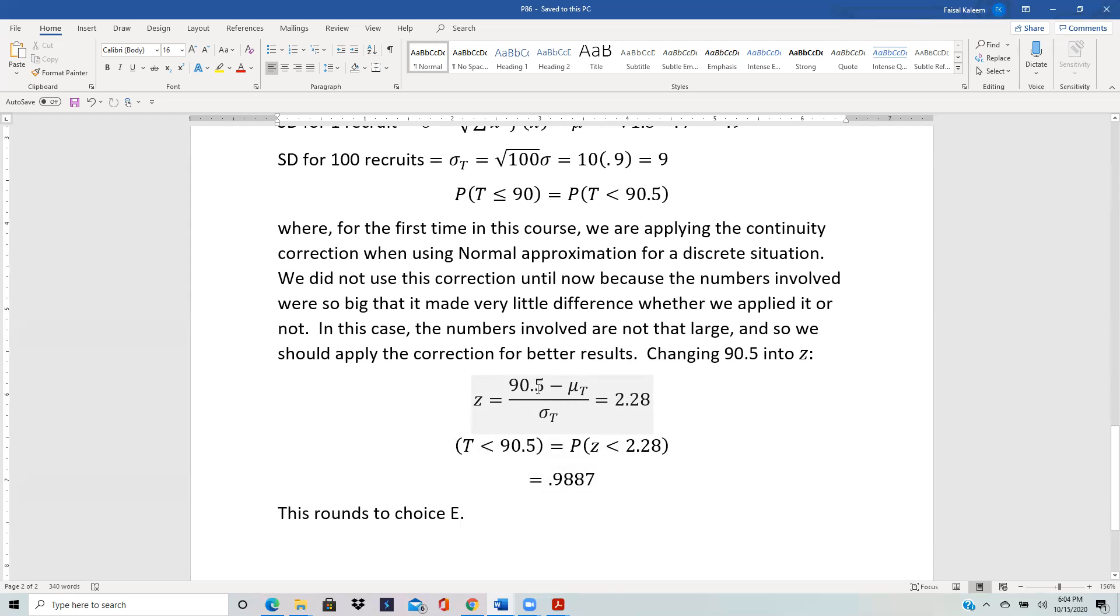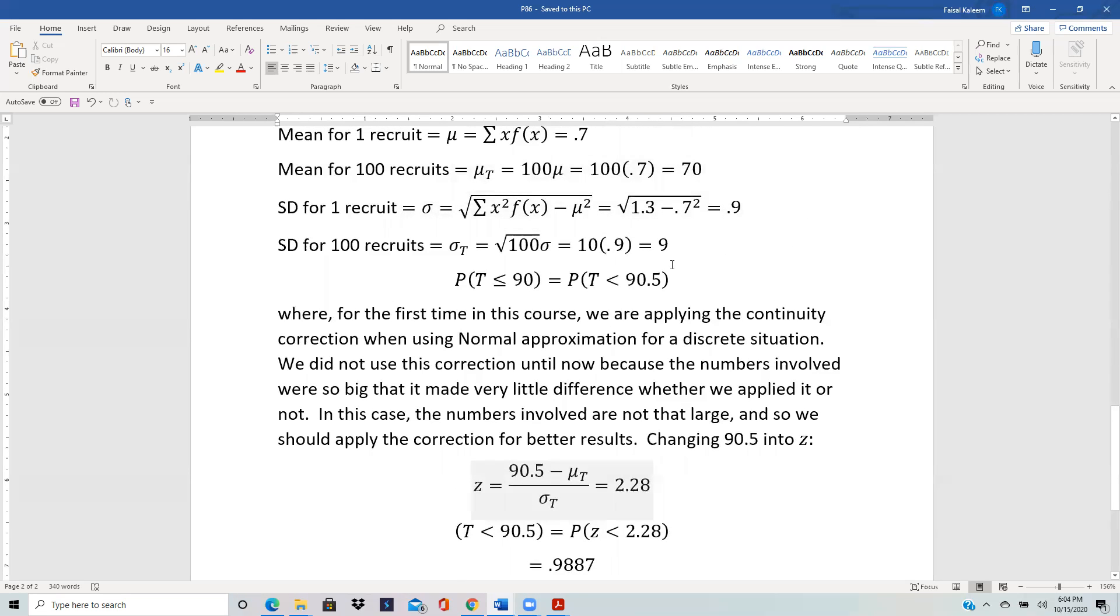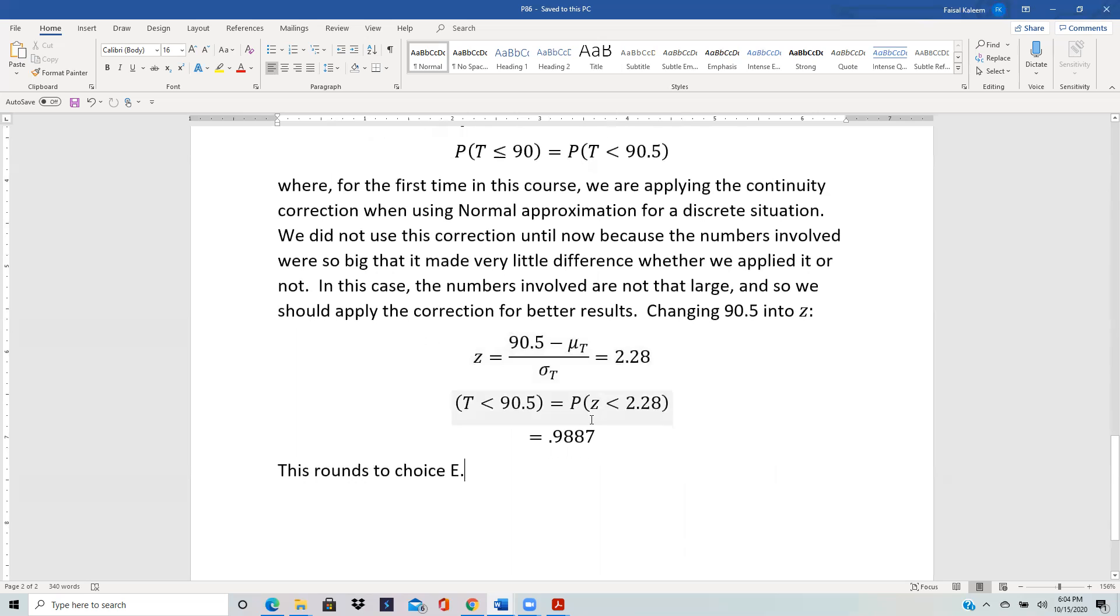So now if we had not applied the continuity correction and we had just worked with 90 here, then you would do 90 minus 70 over 9, and then you will get 2.22. So you see there's some difference between 2.28 and 2.22. There's a 0.06 difference, and that will result in quite different probabilities when you look in the table. So keep this in mind, we were getting 2.22 without the correction and 2.28 with the correction.